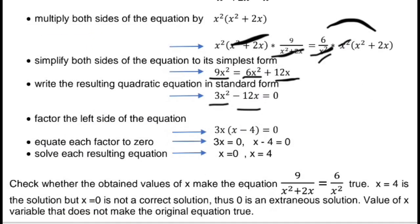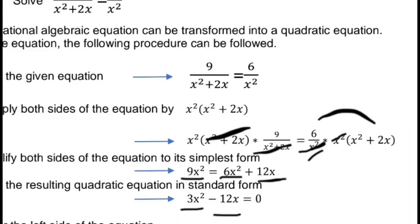Factor: the common factor is 3x. So 3x times the quantity of x minus 4 equals 0, since 3x squared divided by 3x is x, and negative 12x divided by 3x is negative 4. Applying zero product property: 3x equals 0 or x minus 4 equals 0. So x equals 0 or x equals 4. Checking x equals 0 in the original equation: 9 over 0 squared plus 2 times 0 is 9 over 0, which is undefined. So x equals 0 is an extraneous solution.